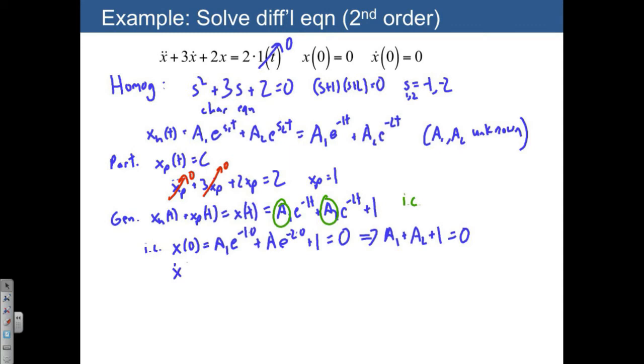The other initial condition was the derivative, where I'm going to very quickly find the derivative of our differential, of our homogeneous part. That's just going to be negative 1a1 e to the negative 1 times 0 plus negative 2a2 e to the negative 2 times 0. And then the derivative of 1 is just 0,